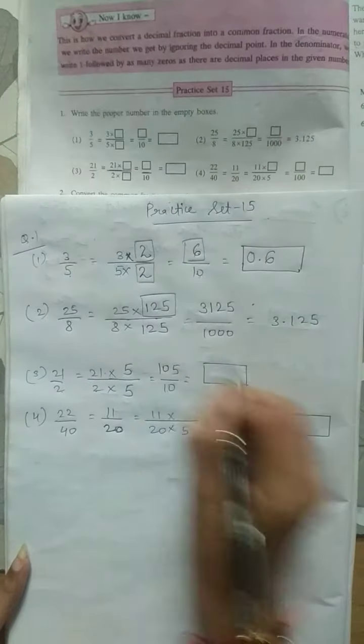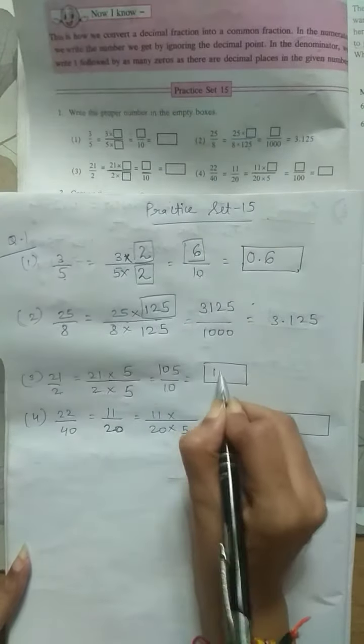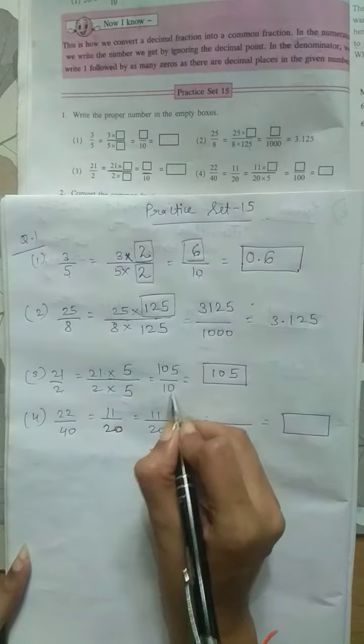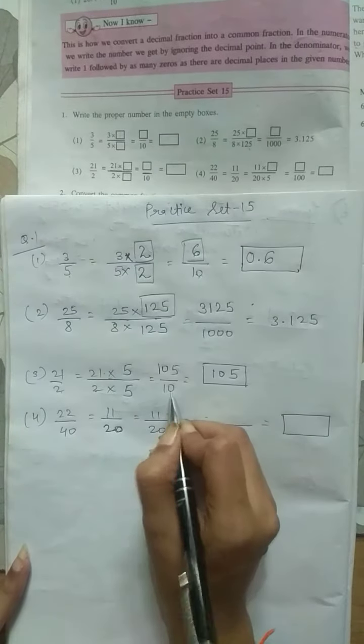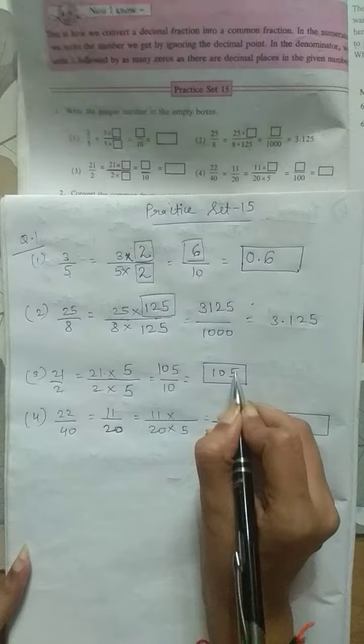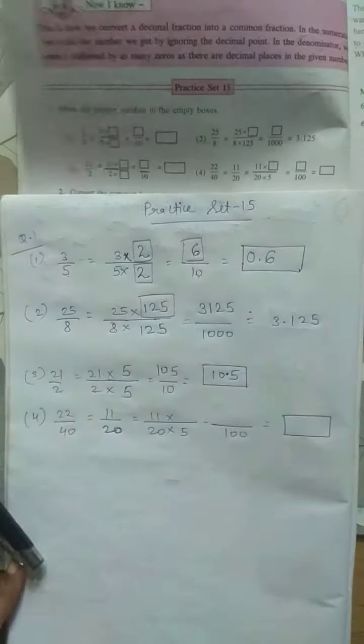Now when we have to convert, we will write the numerator first and count the zeros in denominator 10. So after counting 1, then decimal. So let's put the box.